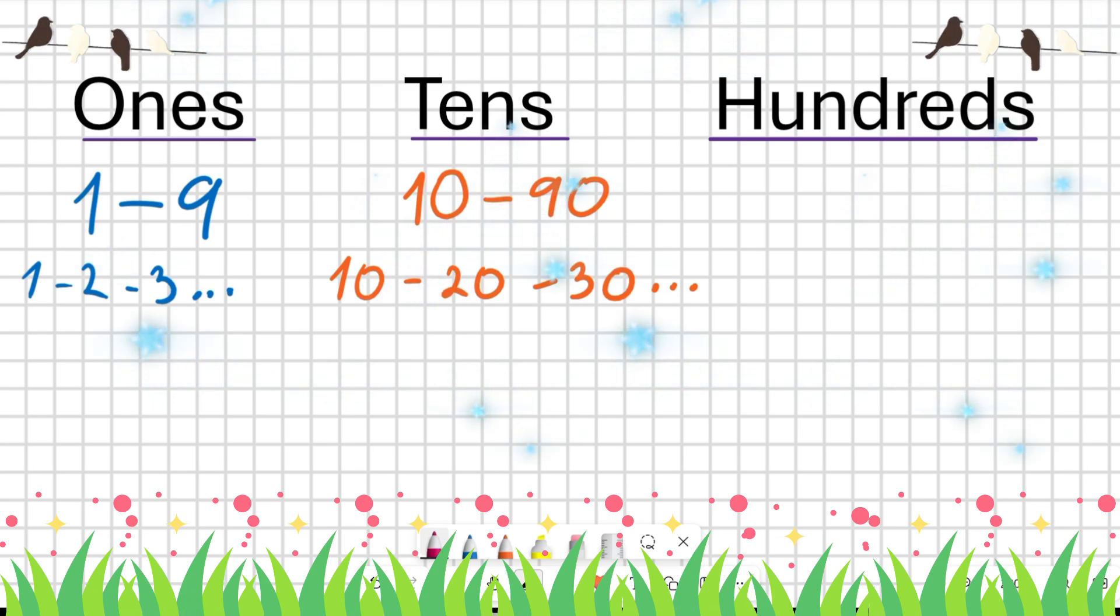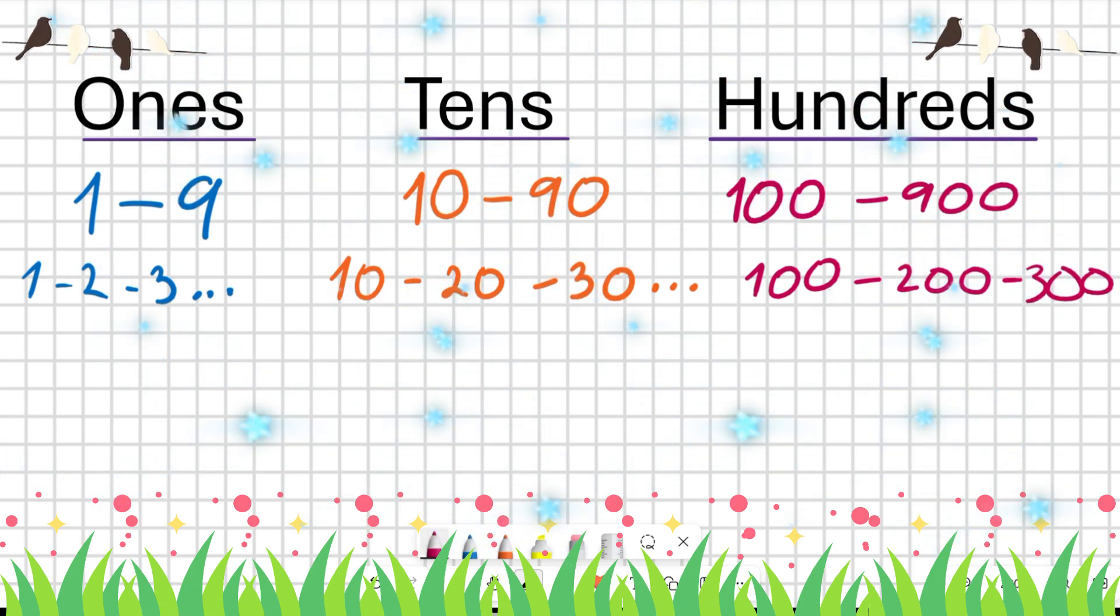Now, the hundreds. Hundreds have two zeros at the end of them, just like this. And they are from one hundred to nine hundred. And we skip hundred digits when counting hundreds. It goes just like the tens: one hundred, two hundred, three hundred, and so on.